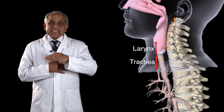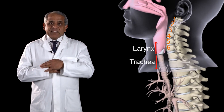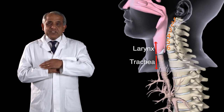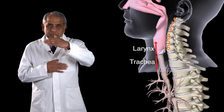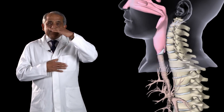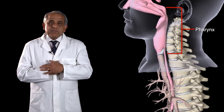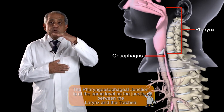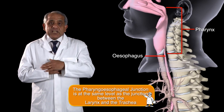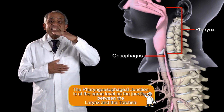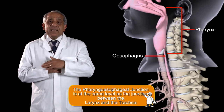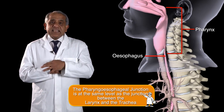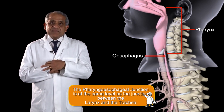Incidentally, it is at that level — the lower border of the cricoid cartilage — that behind the pharynx becomes the esophagus. So the pharyngoesophageal junction is at the same level as the junction between the larynx and the trachea.